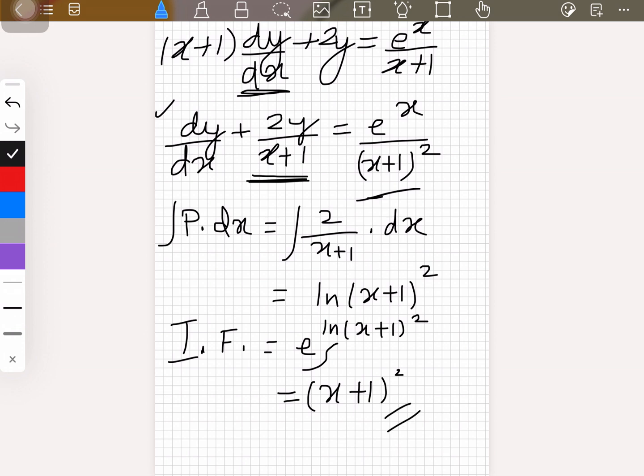So after this, let's move to the next page and multiply the standard form with the integrating factor. What we would have is (x+1)^2 - that was the integrating factor - times [dy/dx + ...